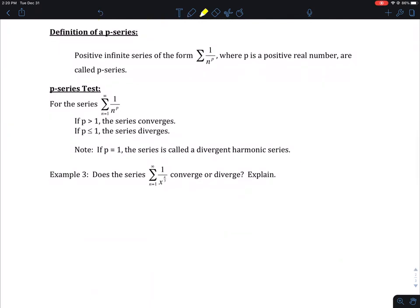And then the next test is what we call a p-series test. So p-series test works when you only have a number, you have no variable on the top, and you just have something n to some number in the bottom. If that number is bigger than one, the series converges. If it is less than or equal to one, it diverges.